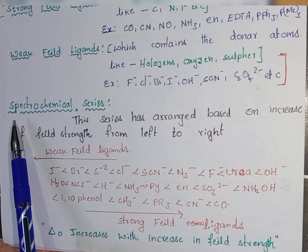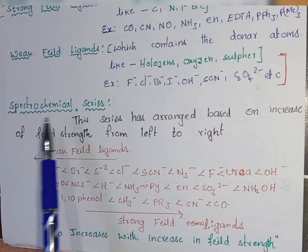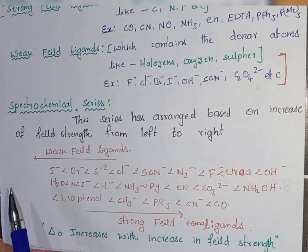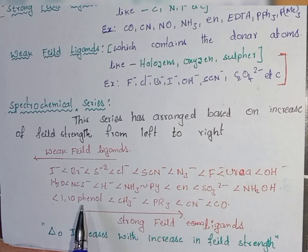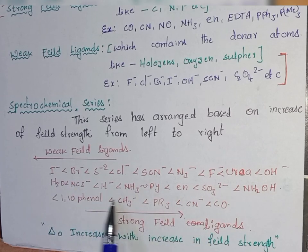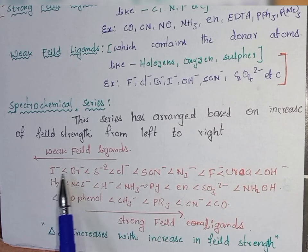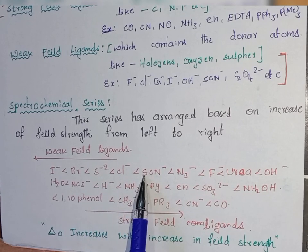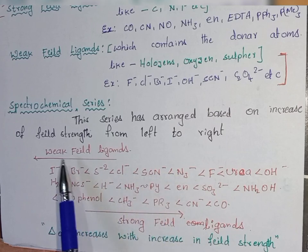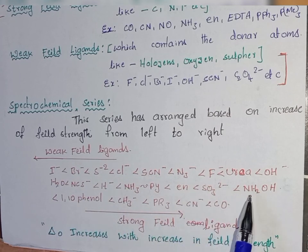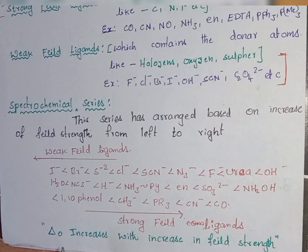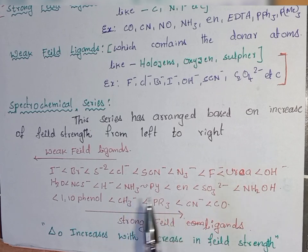Based on this, there is a series called the spectrochemical series, which is arranged based on increasing field strength from left to right. On the left end are all the halogens and ligands with sulfur — all weak field ligands. Going through the series, field strength increases, and the right end contains strong field ligands. Delta O, that is crystal field splitting energy, increases with increasing field strength of the ligands.